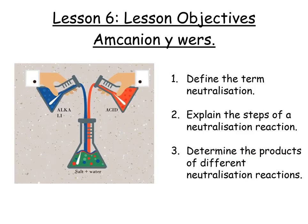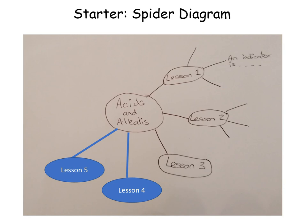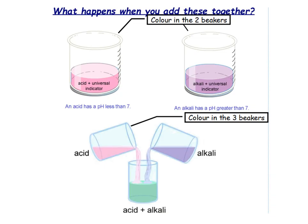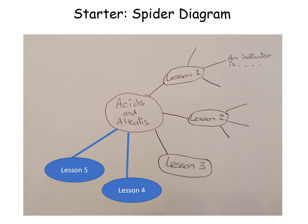So today's lesson objectives. You're going to define the term neutralisation, explain the steps of a neutralisation reaction, and determine the products of different neutralisation reactions. To start, we need your spider diagram out. You're going to add a branch for lesson five, and then add three different branches of bits of information you remember from lesson five.